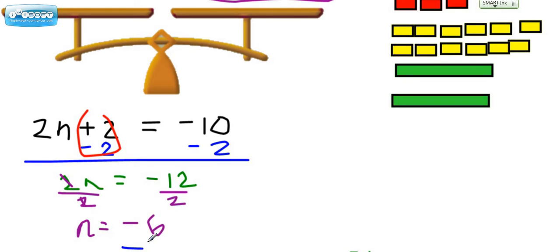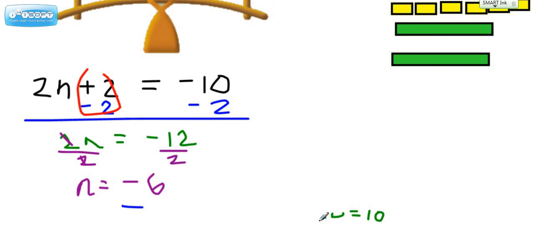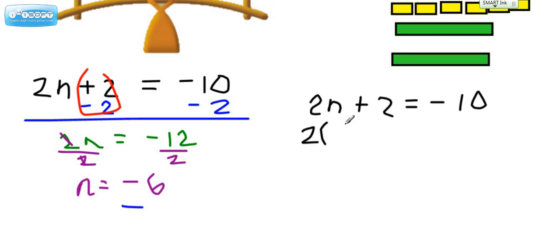Now if we had to do a check, let's take a look at what the check would look like. We would rewrite the equation, which was 2n plus 2 equals negative 10. We would rewrite the equation, but instead of putting the letter n, we will put our solution that we got for n — which, recall, was negative 6. And now we're going to follow order of operations to go ahead and make sure that the two sides of the equation match.